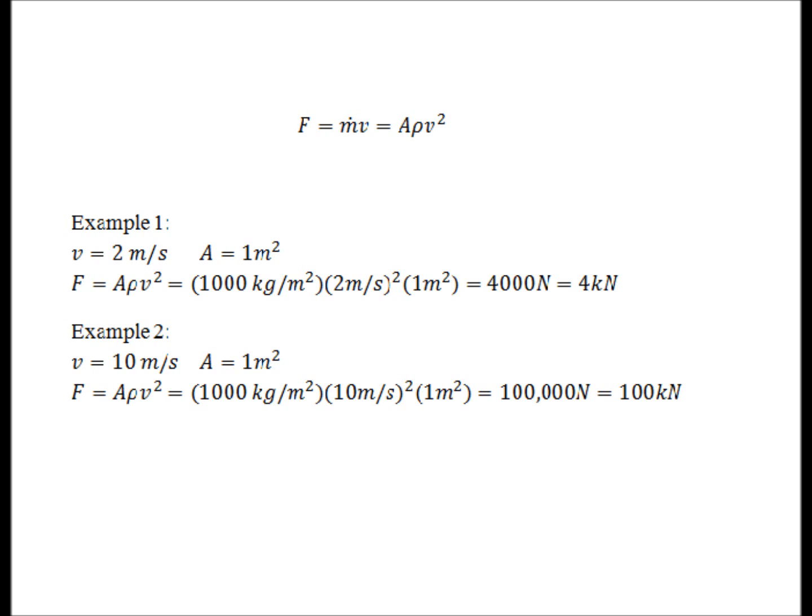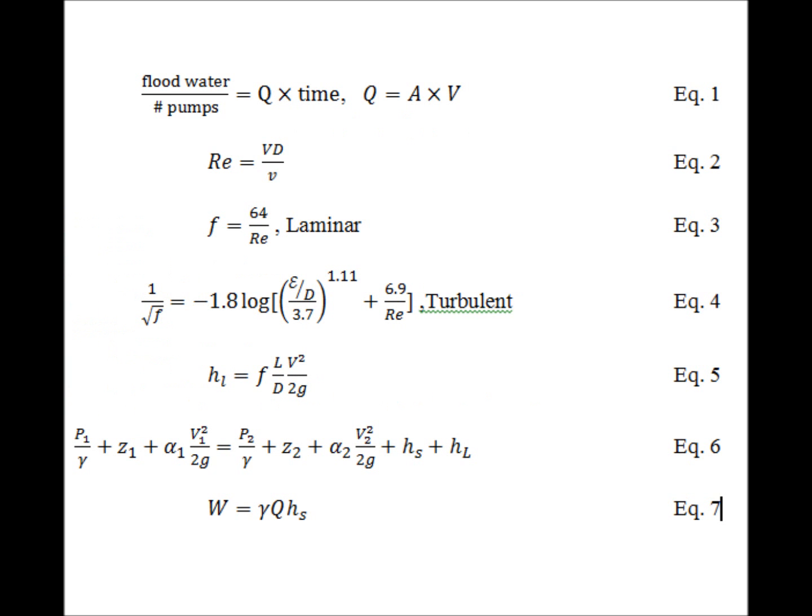In example one, where velocity is 2 m/s, our force equals 4 kN. And in example two, we have velocity of 10 m/s, and our force equals 100 kN. As we can see, with a higher velocity, our force will be higher, and as a result, erosion will occur at a much faster rate, causing the levee to fail.